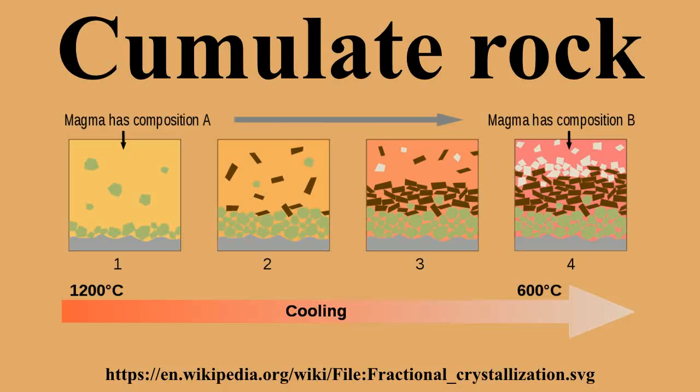The chemistry of a cumulate can inform upon the temperature, pressure and chemistry of the melt from which it was formed. But the number of minerals which co-precipitate need to be known, as does the chemistry of the mineral species of the precipitated minerals.